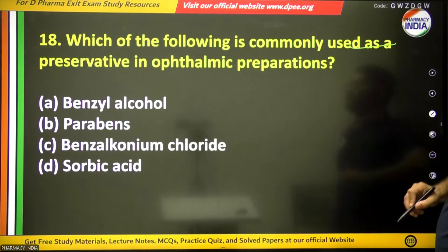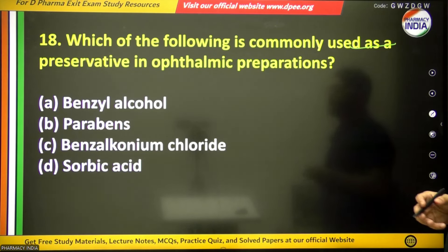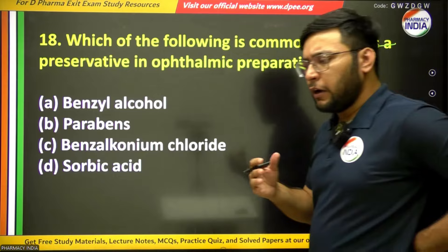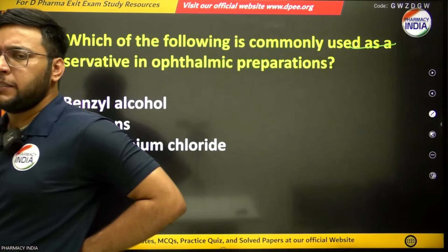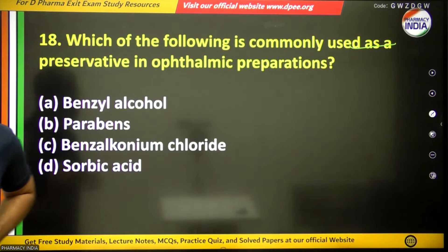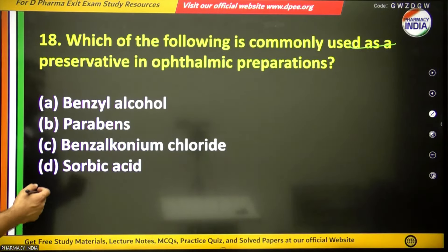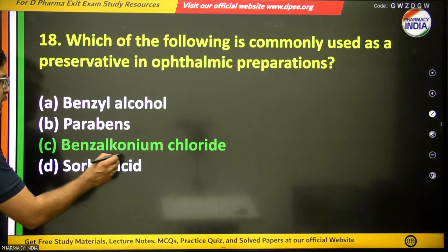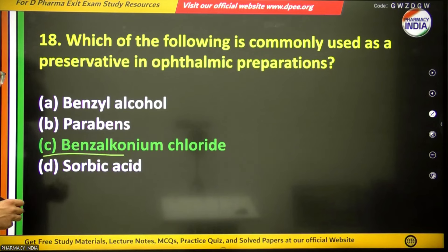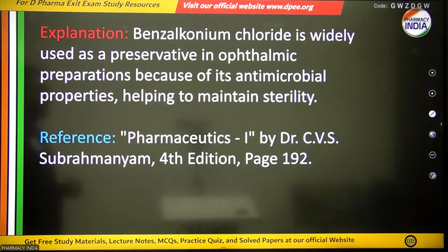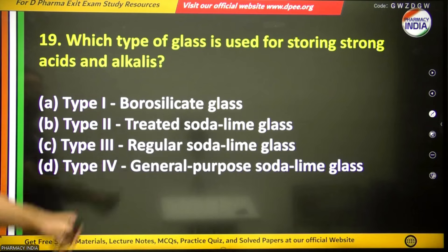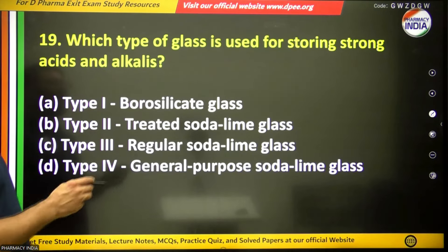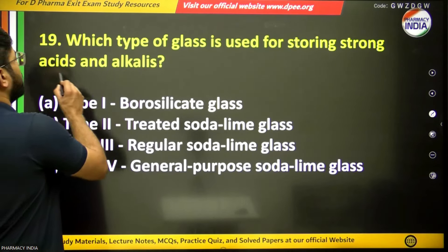The eighteenth question: which of the following is commonly used as a preservative in ophthalmic preparations? A preservative prevents microbial growth. The answer is benzalkonium chloride.